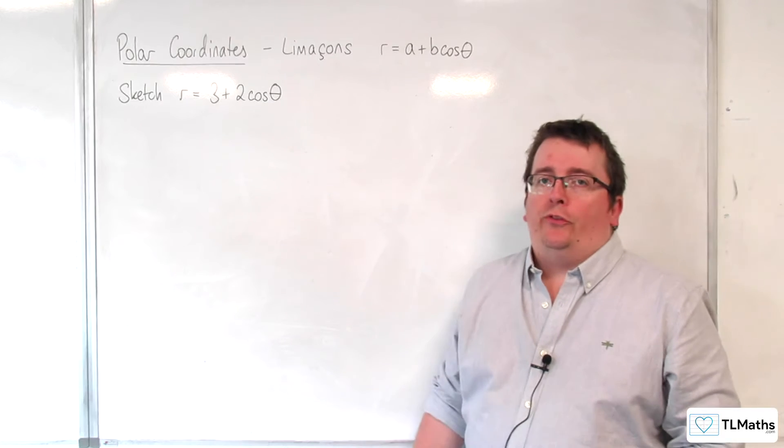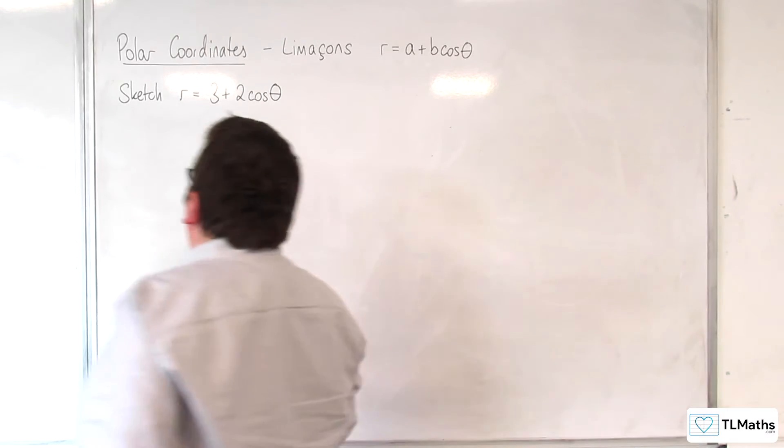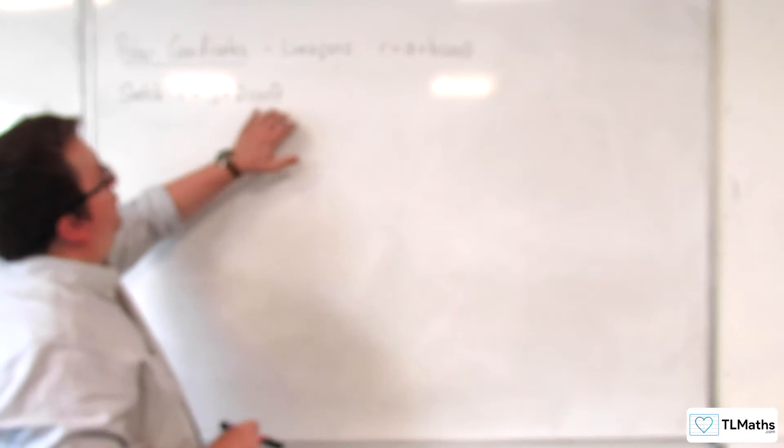In this video we're going to be sketching r equals 3 plus 2 cosine theta, and in a similar way we're going to start off by thinking about cosine theta going between minus 1 and 1.